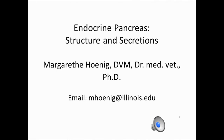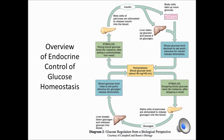Today we are going to talk about the endocrine pancreas, its structure and its function. The endocrine pancreas is involved in the regulation of blood glucose. Blood glucose is held in a relatively stable state, around 90 mg per deciliter, or expressed in millimoles per liter, that would be 5 millimoles per liter.